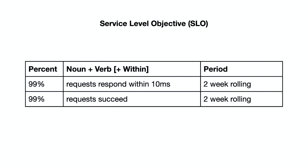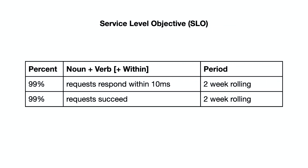A service-level objective consists of three parts: the percent, the noun and verb with an optional within clause, and a period. I'm a fan of this particular table format because it highlights the relevant information without anybody having to twist words into a sentence. I can present this and all of you can make a sentence in your head. Most people tend to forget bits and pieces of it, like the period. I'm not attributing any meaning to it — I'm saying this is the specific artifact with these data points, and we'll worry about meaning later.